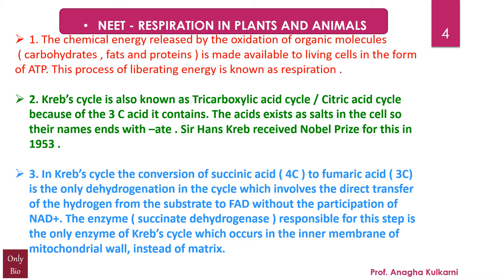In the Krebs cycle, the conversion of succinic acid (a four-carbon compound) to fumaric acid (a three-carbon compound) is the only dehydrogenation in the cycle which involves the direct transfer of hydrogen from the substrate to FAD without the participation of NAD+. The enzyme succinate dehydrogenase responsible for this step is the only enzyme of the Krebs cycle that occurs in the inner membrane of the mitochondrial wall instead of the matrix.